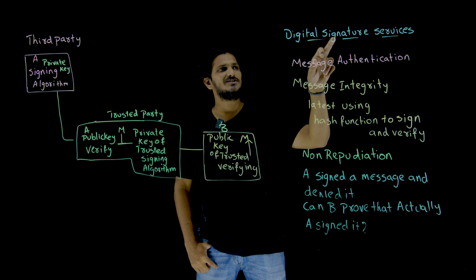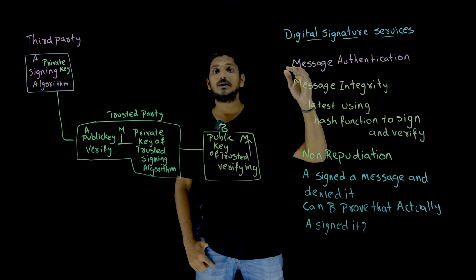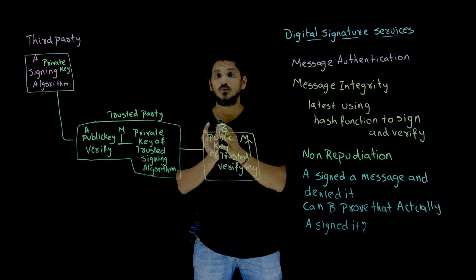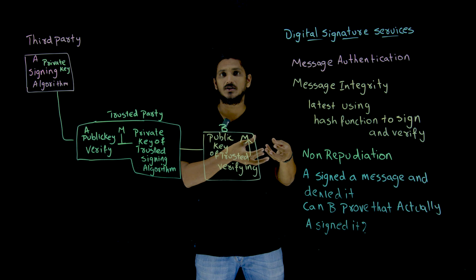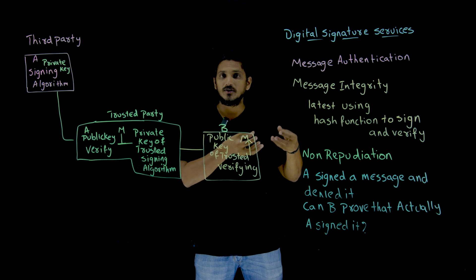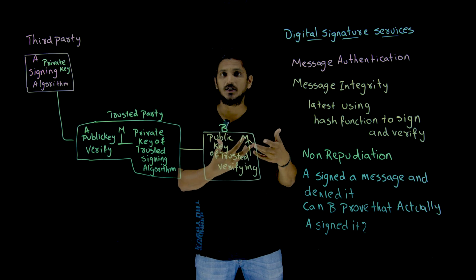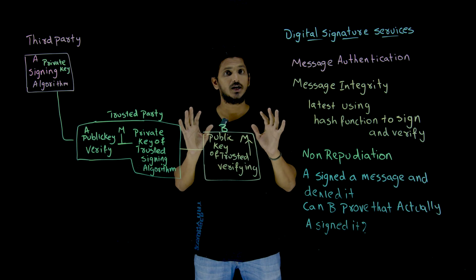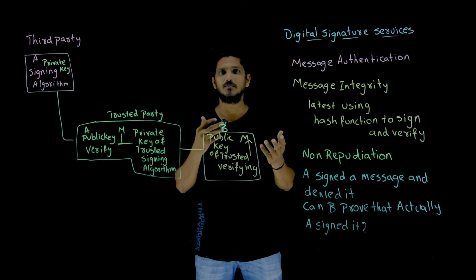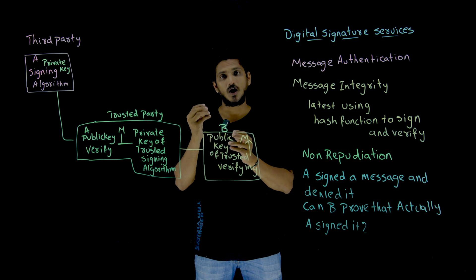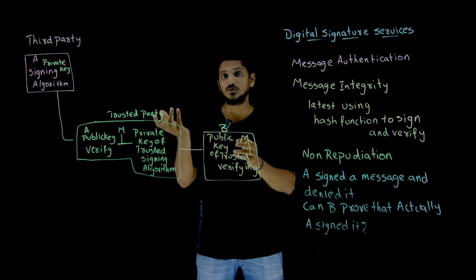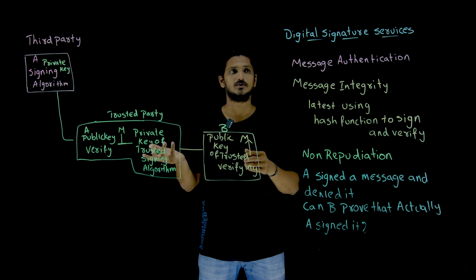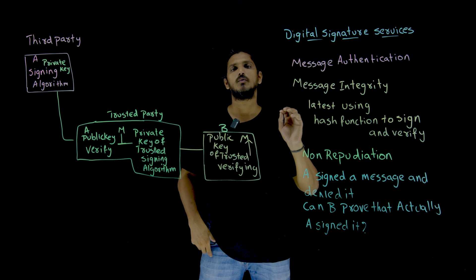Using Digital Signature, we can provide Message Authentication. For each message, we are going to generate a signature. The verifying side is going to check the authentication — whether this is sent by the same person or not. We have not yet discussed any algorithm, but the concept is that we are going to do this using a public and private key, as we discussed in our last class. So Message Authentication can be provided.